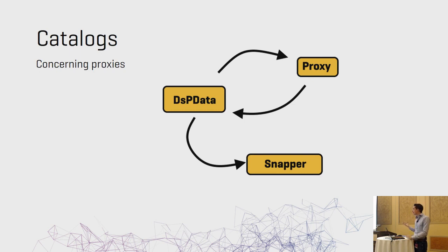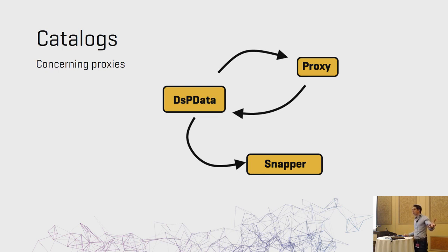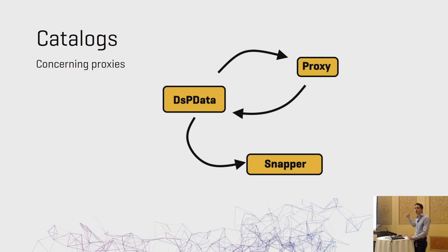Proxies work like this: every DSP data has a proxy, and there's always a default one called the DSP data proxy. The snapper, if it's a data symbol, asks the data for a part. The DSP data then asks its proxy whether to use the default or make modifications, and sends that back. We can define our own proxy — everything the data symbol snapper asks the DSP data can be accessed through the proxy without setting up another snapper or subclassing the DSP data.